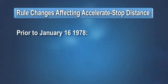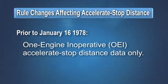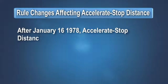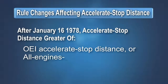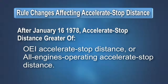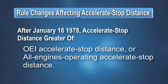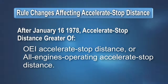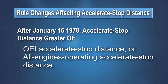Originally, the accelerate stop distance did not include consideration for events other than engine failure that could lead to a rejected takeoff. In 1978, the certification rules were amended to consider both engine failure and non-engine failure scenarios. Accelerate stop distance was revised to be the longer of the distance with one engine failing just prior to V1 or with all engines operating throughout the rejected takeoff. However, accelerate stop distance was still determined only for a dry runway.